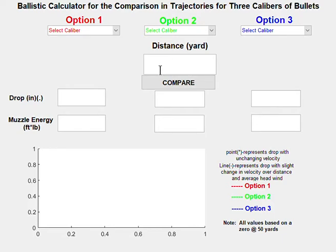We have a box here where you can type in the yardage that you would like the bullet to travel. Hitting this compare button, all of our equations are executed which calculate the drop in inches and the muzzle energy.